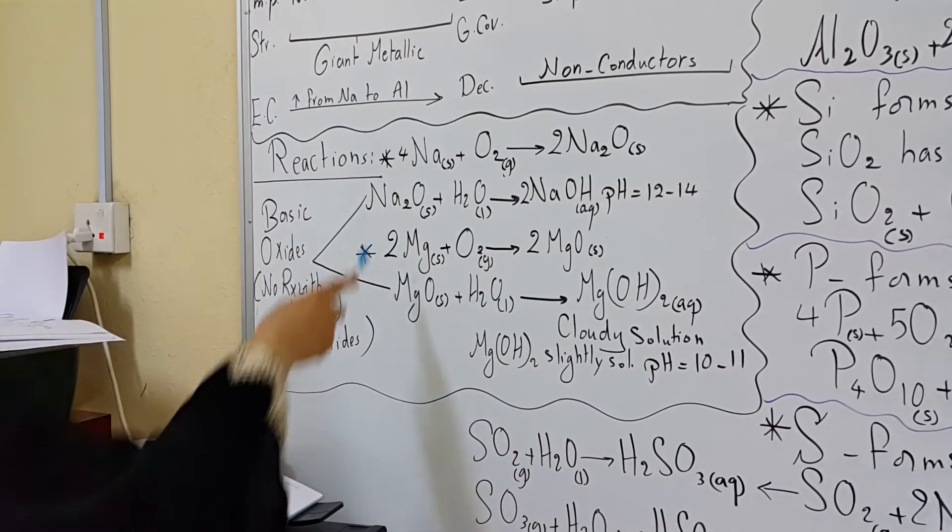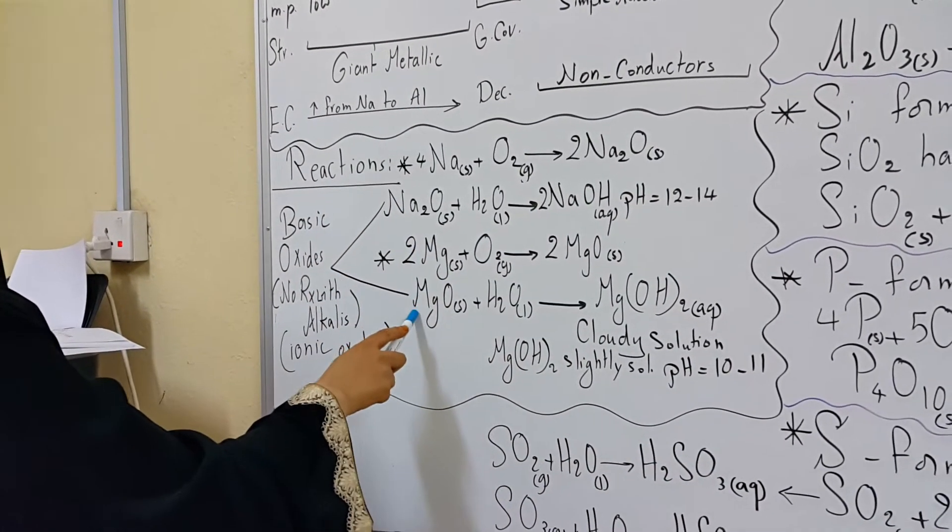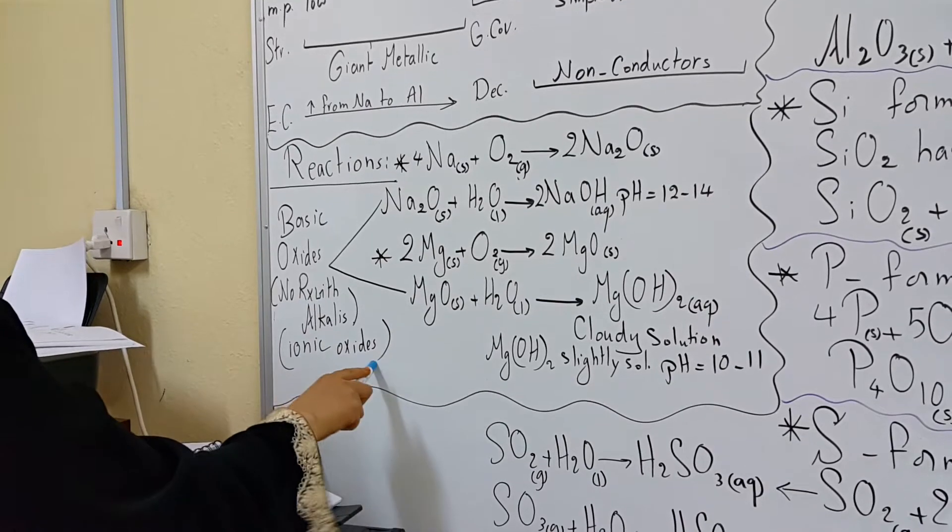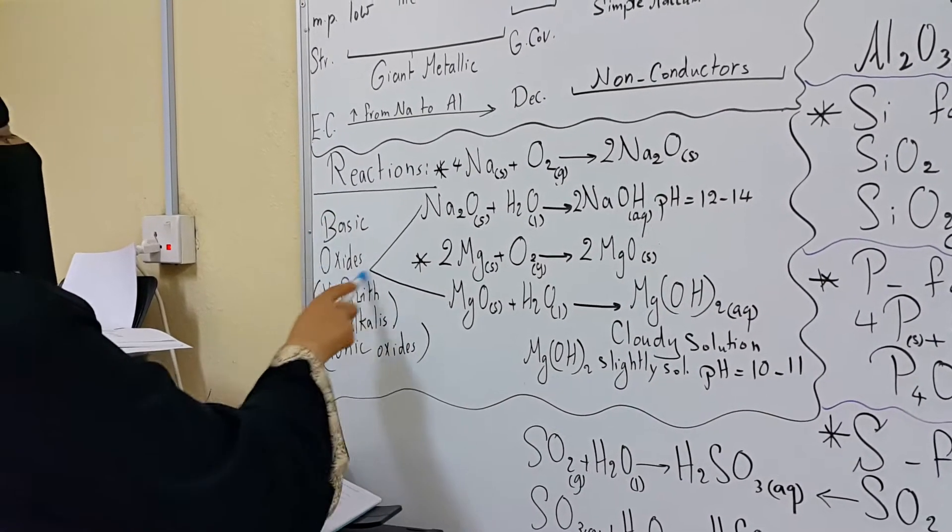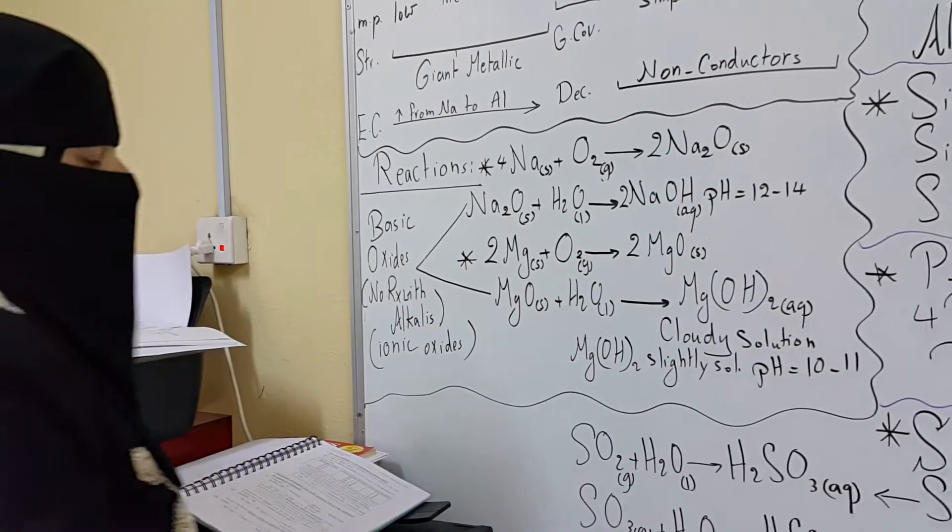And the oxides of sodium and magnesium are ionic oxides and they react only with acids as they have basic properties. They are basic oxides.